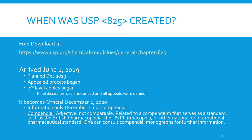When was USP 825 created? You can go to the USP website or type in USP 825 to pull it up and download it yourself. It arrived June 1st of 2019, was planned for December of 2019, and then almost immediately after, appeals began.